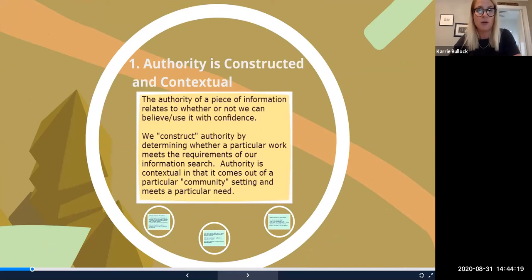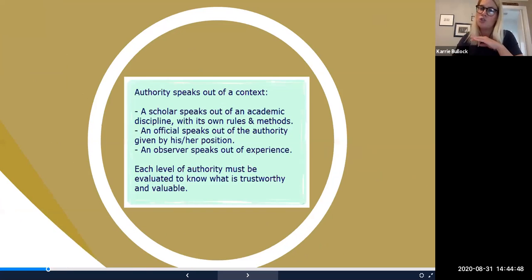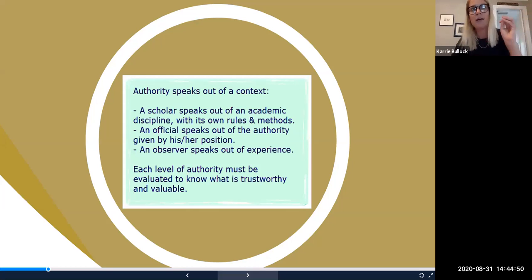So looking at our first framework, authority is constructed and contextual. And when we construct authority, we have agency in that process. So what I mean by that is, it's on us. We make the choice about what we use in our own scholarly process. It's also part of the context of a particular community and meets a particular information need. So a simpler way of thinking about authority might also be author, authorship, sponsorship, and expertise.